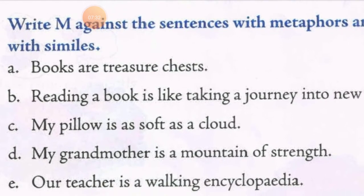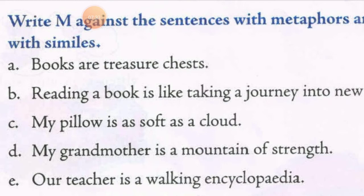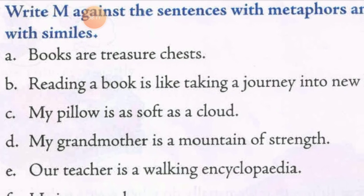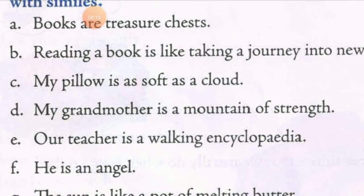Next is E: 'Our teacher is a walking encyclopedia.' Hamara teacher ek chalta phirta encyclopedia hai. This sentence is also a metaphor — it is enforcing something as another, same as 'night is a blanket.' So we will put an M in front of E. F: 'He is an angel.' Here also metaphor is used, so we will put an M there as well.